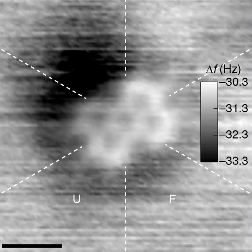No typical molecule can be defined for ionic crystals and covalent crystals, although these are often composed of repeating unit cells that extend either in a plane or three-dimensionally. The theme of repeated unit cellular structure also holds for most condensed phases with metallic bonding, which means that solid metals are also not made of molecules. In glasses — solids that exist in a vitreous disordered state — atoms may also be held together by chemical bonds with no presence of any definable molecule, nor any of the regularity of repeating units that characterizes crystals.